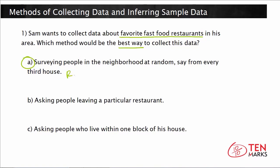This is a random sampling. It's random because if Sam just goes around to every third house, he will span a large area across the neighborhood. Such a sample will not be affected by choices, because you cannot conclude that people in every third house may like pizza more than every fourth house, for example. So this is pretty unbiased in that regard — there's no necessary pattern between house number and fast food preference. This is random and relatively unbiased.